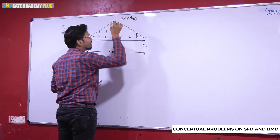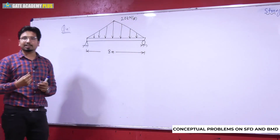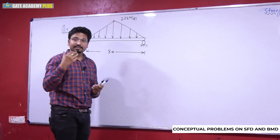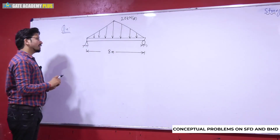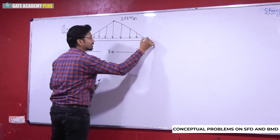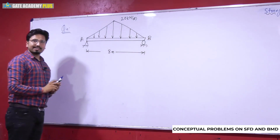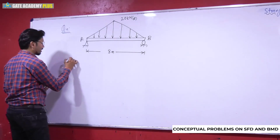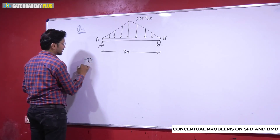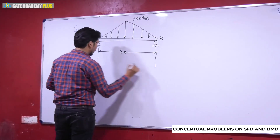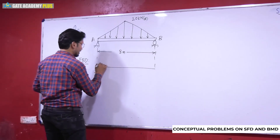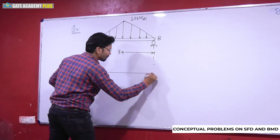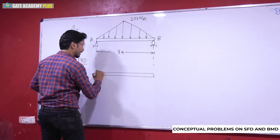Maximum intensity 20 kN per meter है। अगर आपको समझ आ चुका है तो आप video के साथ-साथ solve करना start कर सकते हैं। This is support A and this is support B. किसी भी beam के case में पहला काम free body diagram बनाना है — supports को remove करके उनके reactions represent करेंगे।